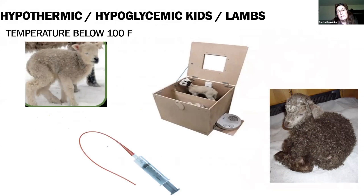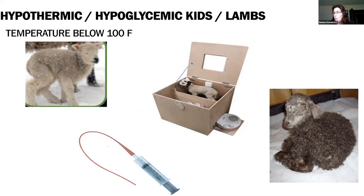Hypothermic or hypoglycemic lambs — you think they're up and eating well, and then one morning you've got a lamb that's all huddled up and not very responsive. You take its temperature and it's below 100 degrees Fahrenheit. That's a clue you need to do something for this lamb. What we need to do is provide them with some form of energy source and then get them warmed up. I want to stress — the energy source needs to be provided first before we try to warm them up, or we'll cause them to go into seizures. If they can nurse, some warm milk or warm sugar water or an electrolyte with glucose supplement — get that into them.